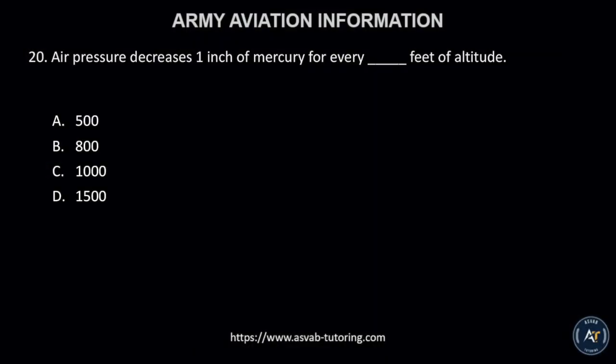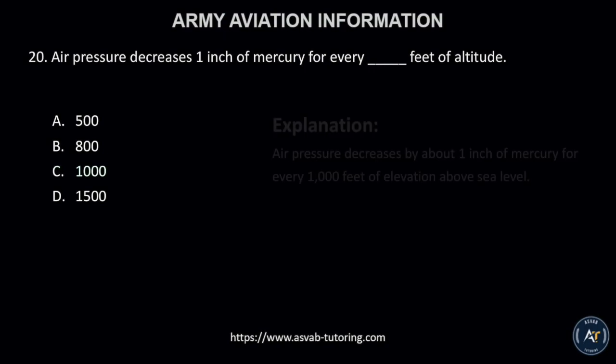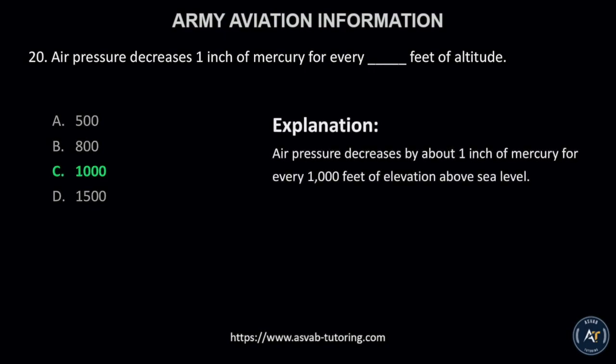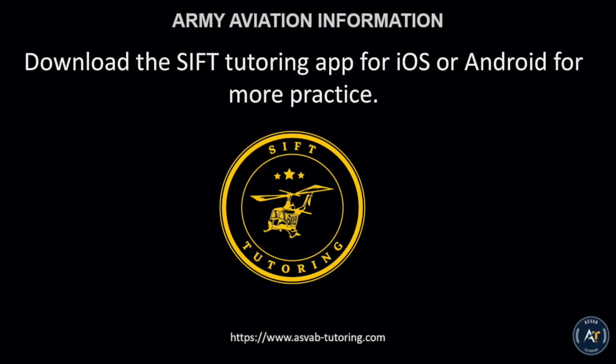Number 20. Air pressure decreases 1 inch of mercury for every blank feet of altitude. A, 500; B, 800; C, 1000; or D, 1500? The correct answer is letter C, 1000. Air pressure decreases by about 1 inch of mercury for every 1,000 feet of elevation above sea level. Download the SIFT Tutoring App for iOS or Android for more practice.